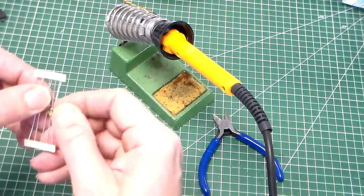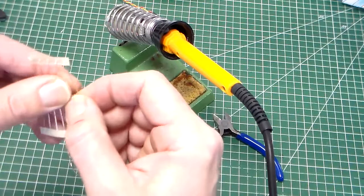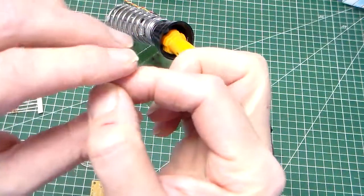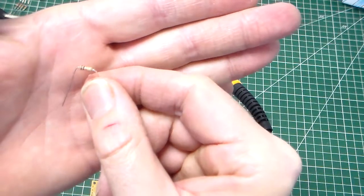...is R1, which is a 10k resistor. The color code for that is brown, black, orange. We've got our resistor and we bend the legs of the resistor to 90 degrees.